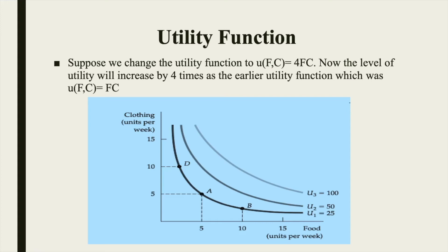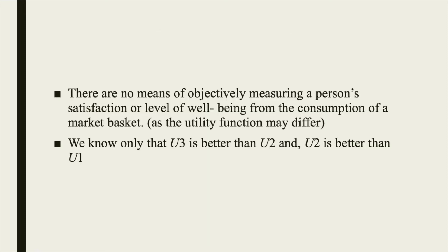From here it is understood that the utility function is simply a way of ranking different market baskets, and the magnitude of the utility difference between any two market baskets does not really tell us anything. This is so because we have no means of objectively measuring a person's satisfaction or level of well-being from the consumption of a market basket. We know only that U3 is better than U2 and U2 is better than U1, but we do not know by how much one is preferred to the other.